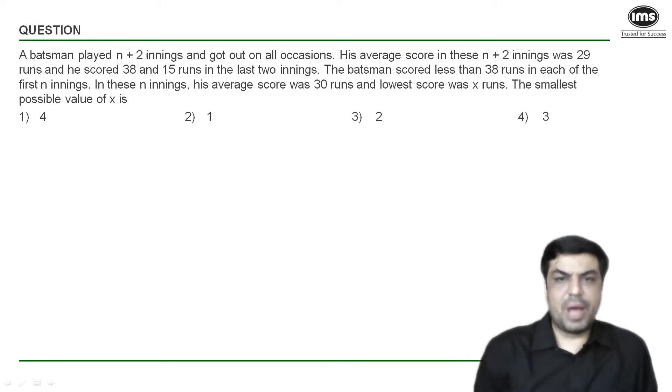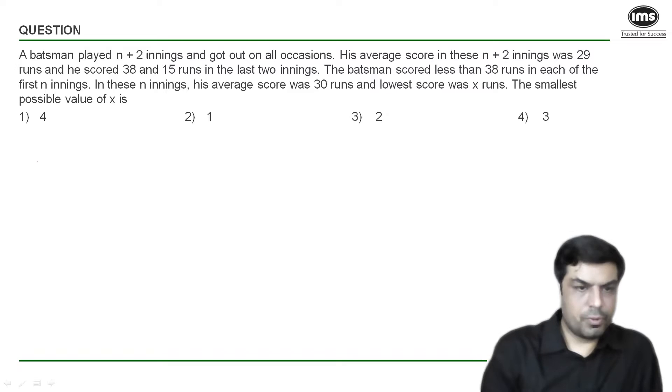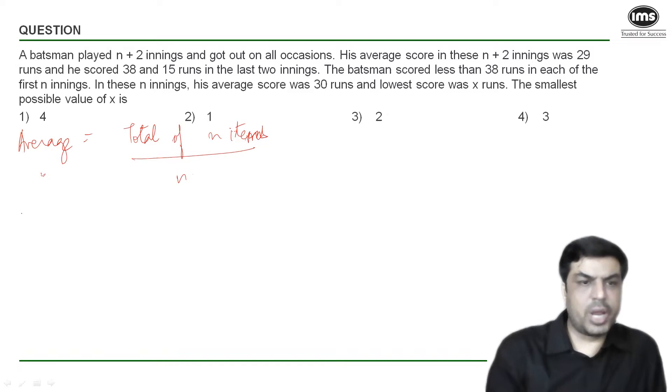So we've got a question from averages here and we will see two different methods of solving this question. First let's do it by the formula. We know that average is given by total of n items divided by n or the number of items. From here I can say that total of n items is nothing but n times the average.